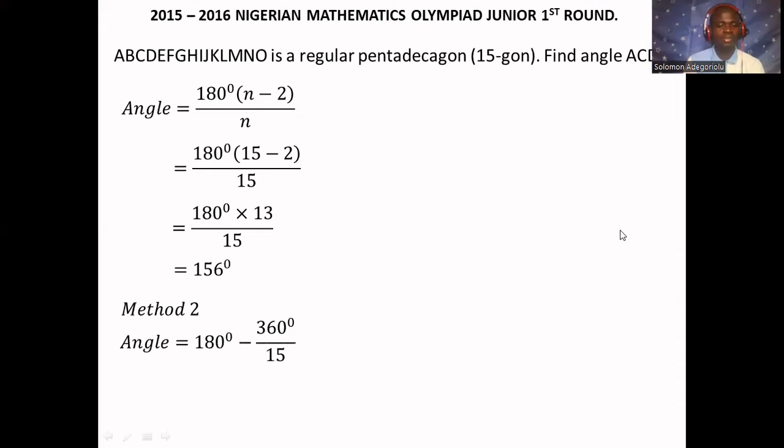Angle equals 180 degrees minus 360 degrees divided by 15. The 360 degrees divided by 15 is the exterior angle. 360 divided by 15 gives us 24. And when you subtract 24 from 180 degrees, that's going to be 156 degrees. So you can either use the first method or the second method.